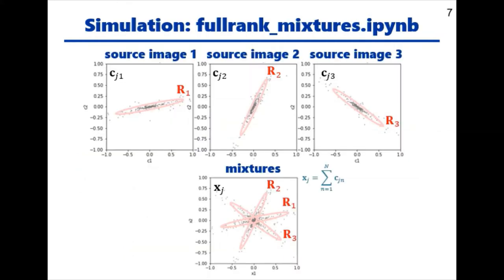Here we show a simulation example. We generated mixtures according to the signal model by running a Python script full-rank mixtures, which is available to you. We see each source image lay more or less in an ellipse representing the spatial covariance matrix R. Consequently, the mixtures, which are the sum of the source images, looked like this.